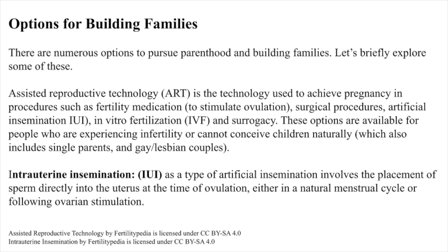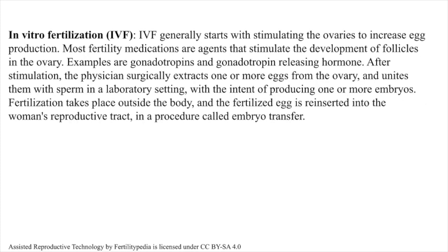Intrauterine insemination (IUI), a type of artificial insemination, involves the placement of sperm directly into the uterus at the time of ovulation, either in a natural menstrual cycle or following ovarian stimulation. In vitro fertilization (IVF) generally starts with stimulating the ovaries to increase egg production. Most fertility medications are agents that stimulate the development of follicles in the ovary — examples are gonadotropins and gonadotropin-releasing hormones. After stimulation, the physician surgically extracts one or more eggs from the ovary and unites them with sperm in a laboratory setting, with the intent of producing one or more embryos. Fertilization takes place outside the body, and the fertilized egg is reinserted into the woman's reproductive tract in a procedure called embryo transfer.